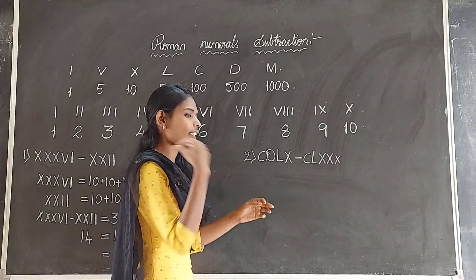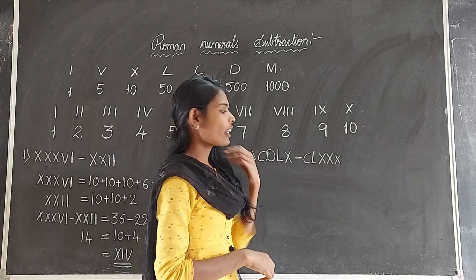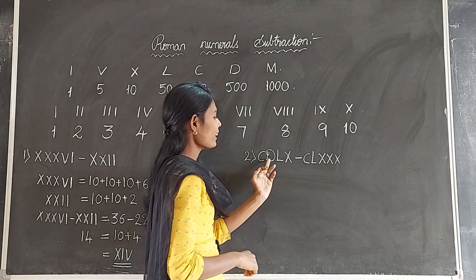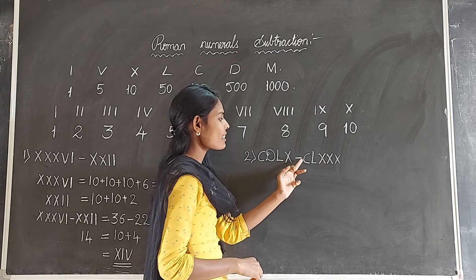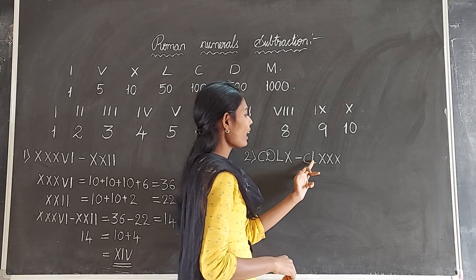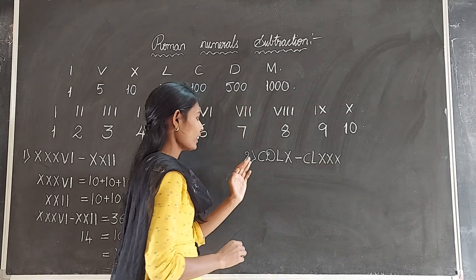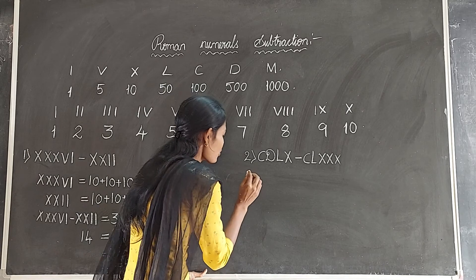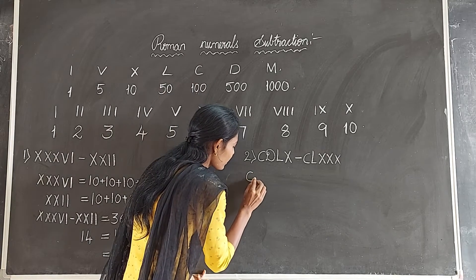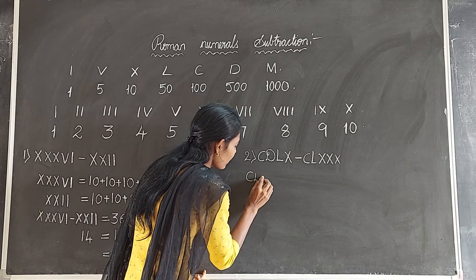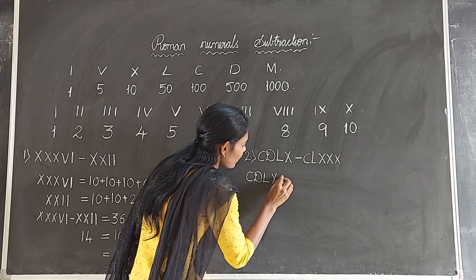Now see the second example. Here we have the Roman numeral CDLX minus CLXXX. So first we take CDLX.